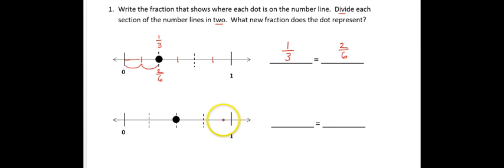This time my whole has been divided into 4 equal pieces. And the dot is at the end of the second piece. So the dot shows me 2 fourths. So we'll start with that fraction. And just like before, I'm going to divide each section in half, or into 2 pieces.